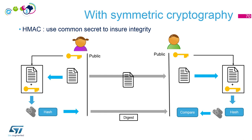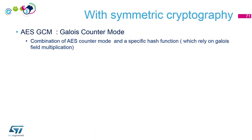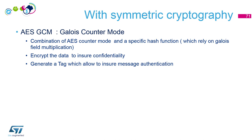Another algorithm is AES-GCM (Galois/Counter Mode). When we encrypt with counter mode, we also use a specific hash function which relies on Galois field multiplication to ensure message integrity. It will encrypt data to ensure confidentiality and also generate a tag which allows ensuring message authentication.